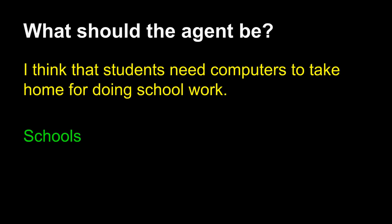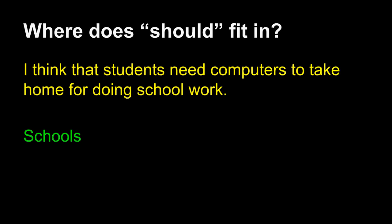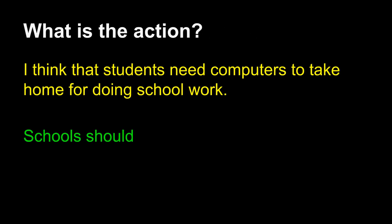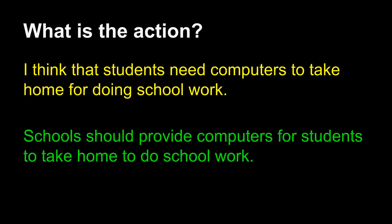Sometimes your responsible agent is not yet there in the rough opinion that you sketch. You must think: who can actually do the action you are looking for? In this case, it's schools. We'll follow the responsible agent with the word "should," and that should be easy enough. After that, I think about the action — I'm talking about students receiving computers, taking them home and doing school work. That means I'm asking the schools to provide that. So my claim ends: schools should provide computers for students to take home to do school work. You'll notice in the action I carry most of the original rough opinion, but my original rough opinion did not include "schools" or "should." My new formal claim is much more focused, much more specific, and much more easy to support when developing a logical argument: schools should provide computers for students to take home to do school work.